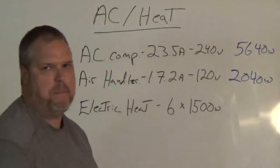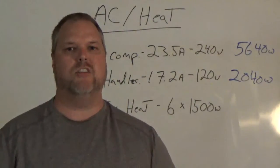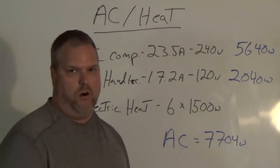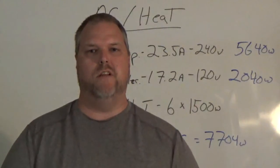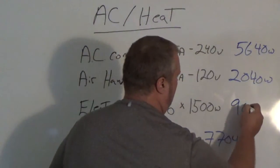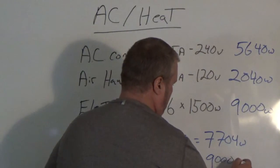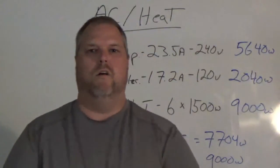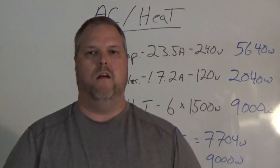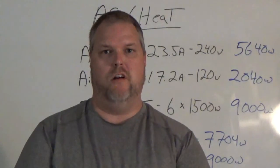2,040 watts. Are we done? No, because those two units together make up our AC, so we have to add those together. AC equals 7,704 watts. Now we do simple math: six units at 1500 watts apiece gives us 9,000. So if we're going to complete line 13, we're going to come up with heat as our largest. Now let's cover largest motor and how we find it.